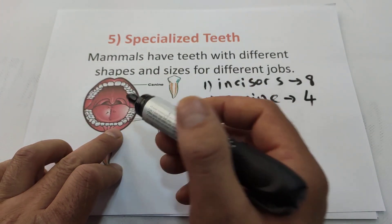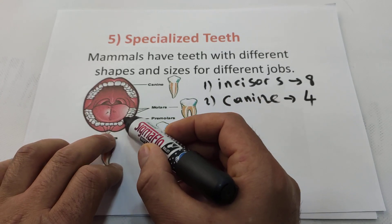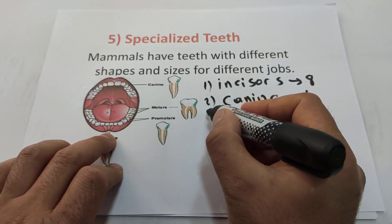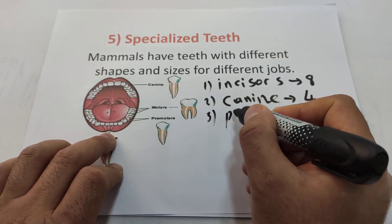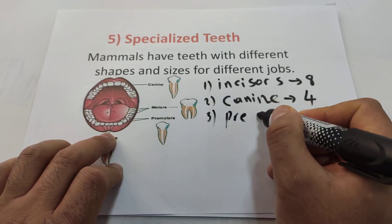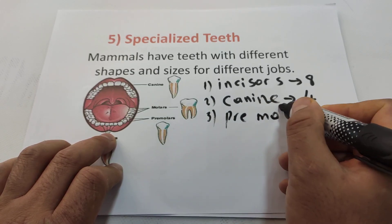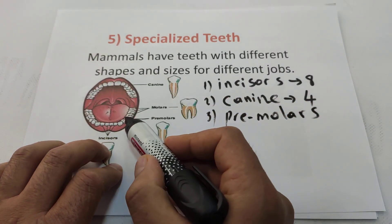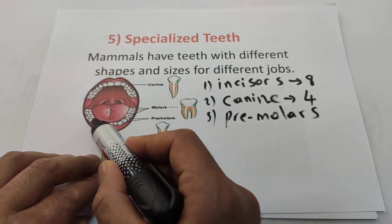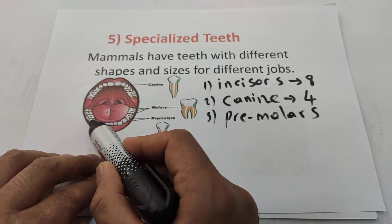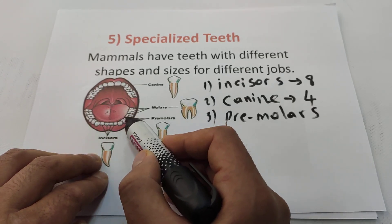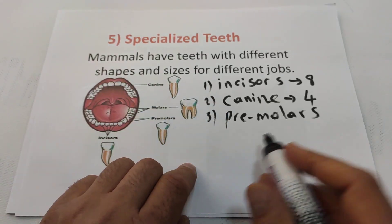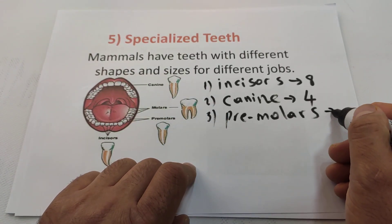Next to the canines, we call these premolars — the third kind of teeth. There are two premolars on each side, four up and four down, for a total of eight premolars.